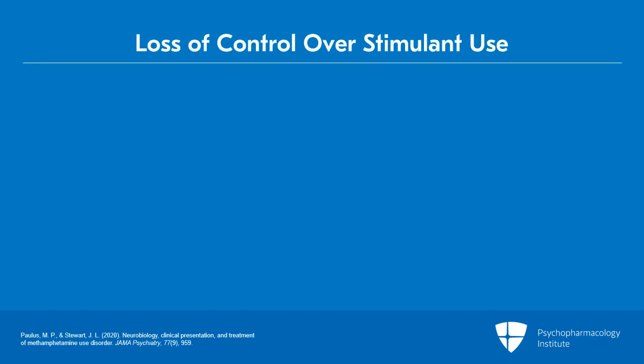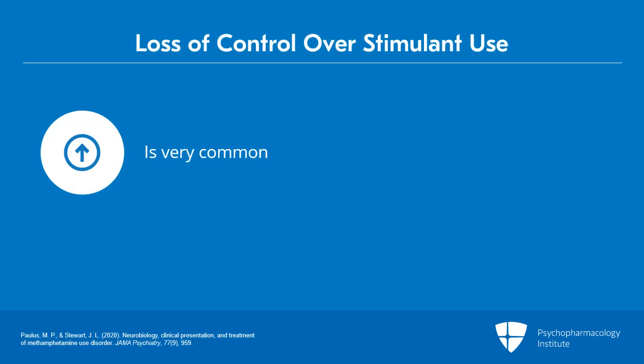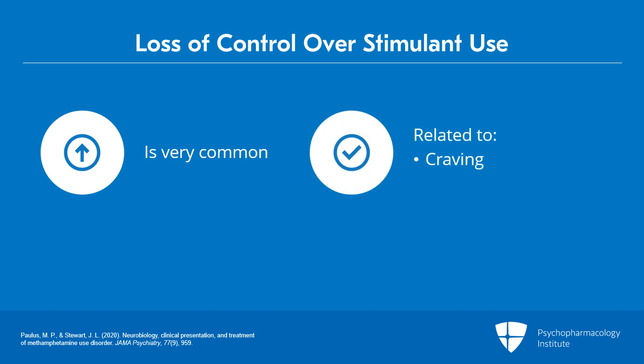Loss of control over use is very common. A person might say they're just going to use a little bit of cocaine tonight to get their energy up, and then they end up using several grams without having had that plan. Craving for stimulants is very common — people remember that the stimulant helped them feel good and helped their brain reward processes work properly, so they're constantly thinking about getting more.